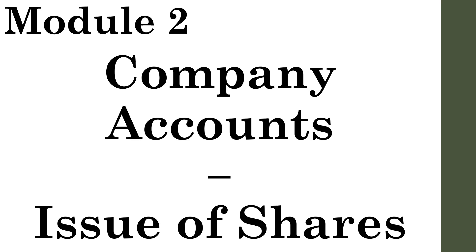In this module we have been discussing about the concept of oversubscription and how the company is going to deal with a situation of oversubscription. We have mentioned that there are three to four alternatives in which the company will take one of the alternatives to deal with the oversubscription. As per this module we will be dealing with three alternatives, covering all those four alternatives mentioned in some other texts.